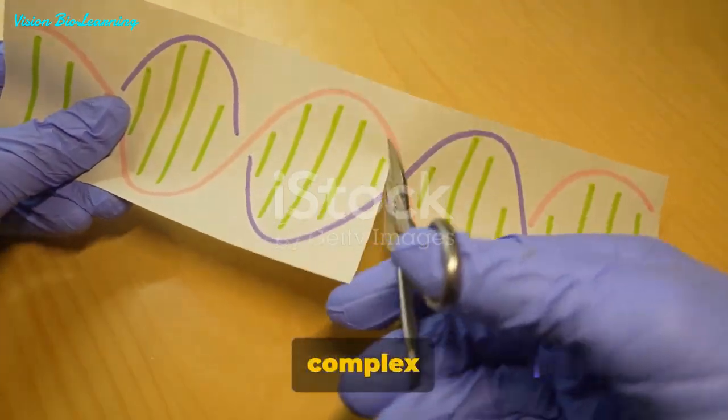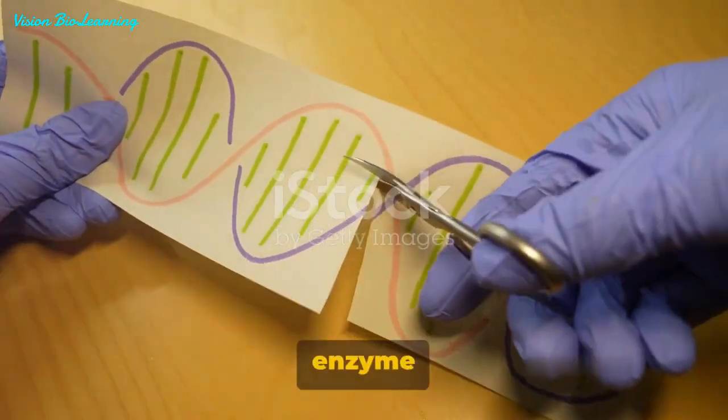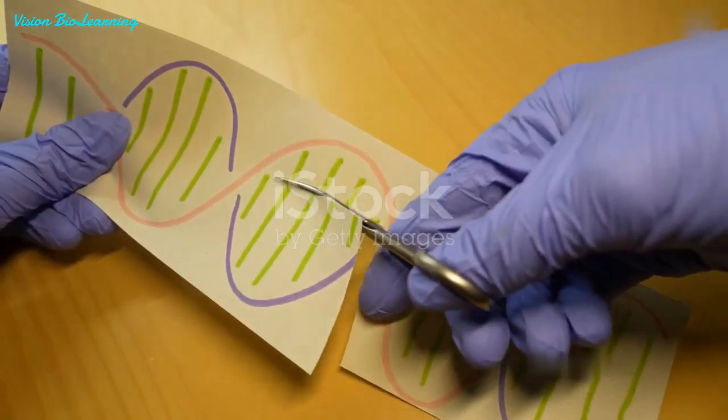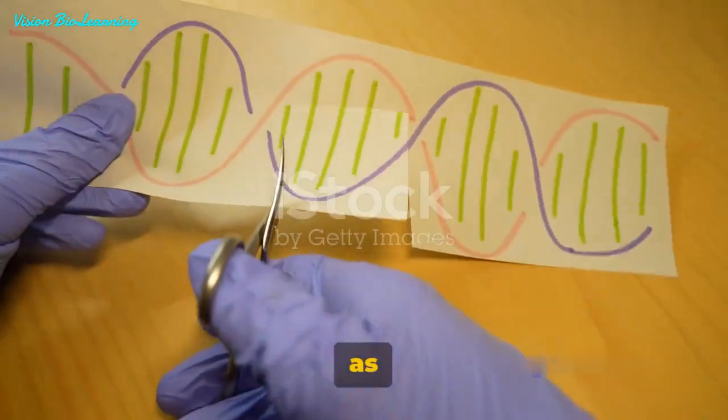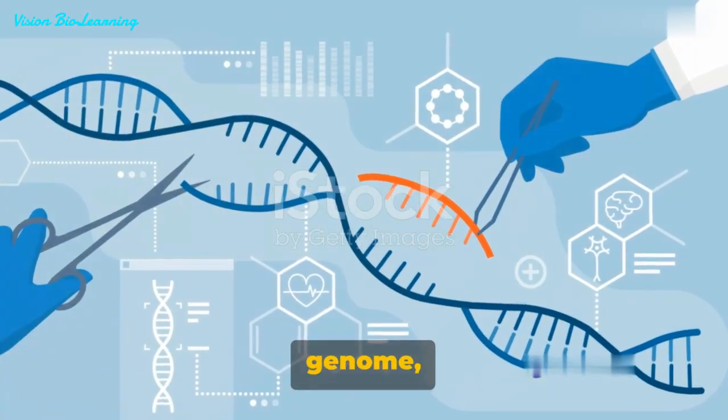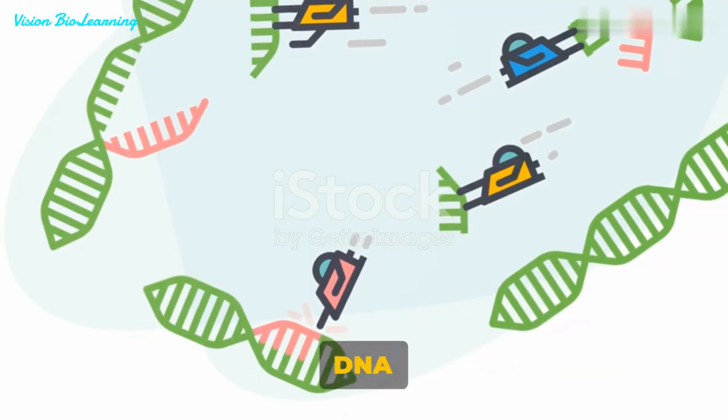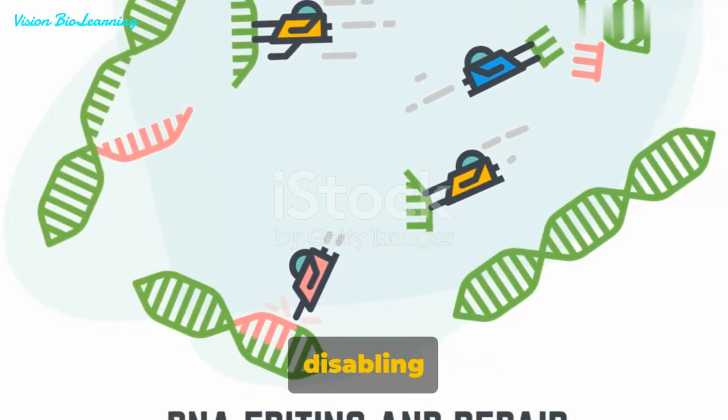These two RNAs then form a complex with a protein called Cas9, a nuclease, an enzyme that can cut DNA. When the matching sequence, known as a guide RNA, locates its target within the viral genome, Cas9 swings into action, cutting the target DNA and effectively disabling the virus.